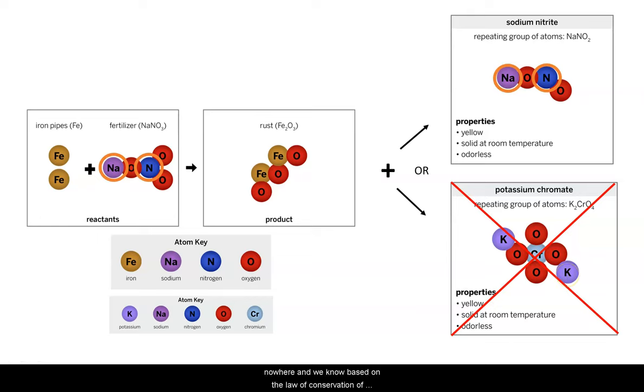And we know, based on the law of conservation of matter, that this is not the case. Therefore, we can let Westfield know that the iron pipes and the fertilizer reacted in the town of Westfield to cause rust and sodium nitrite to be in their water.